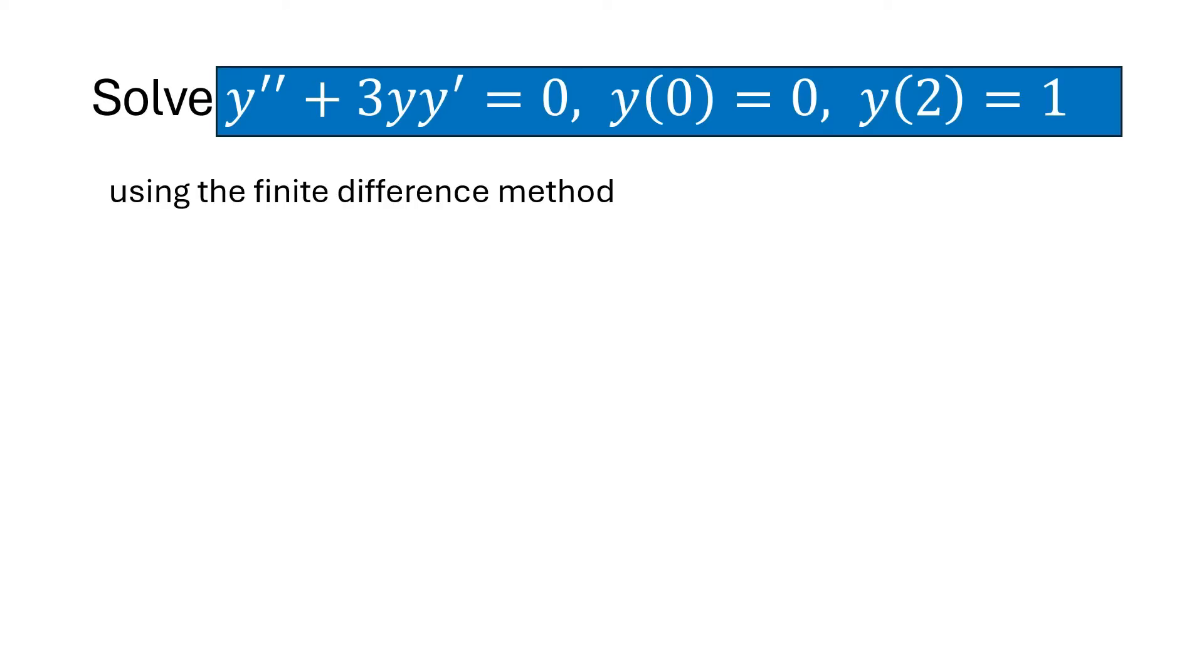The first step that we need to do is to discretize the equation on the grid. For that we will divide the interval into n subintervals. In this case let's assume we use 50 subintervals. Then the width of the subinterval or spacing between two adjacent points on the grid is 0.04.